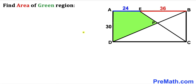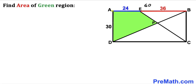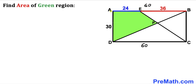Our very first step: the whole side length AB is the sum of the two individual lengths — 24 plus 36 gives us 60. So if side AB is 60, then the opposite side CD is also 60 units. Side AD is 30 units.